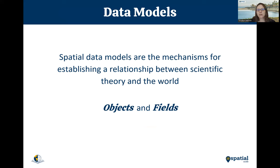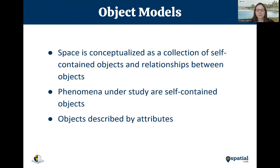Spatial data models are a mechanism for establishing some relationship between scientific theory and the real world. The first level on which we think about this is objects and fields. In object models, space is conceptualized as self-contained objects, and you think about the relationships between them. Anything you want to represent in the real world that you can easily draw a boundary around is usually considered some kind of object model.